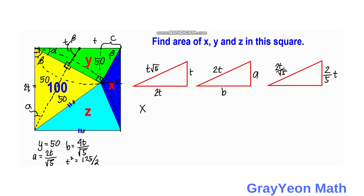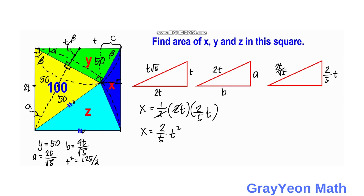For the area of X, since it is a triangle, the area equals one half times the base times the height. The base is the side of the square, which is 2t, and the height is c, which is 2t/5. Simplifying: X equals one half times 2t times 2t/5, which equals 2t²/5. Substituting t² = 125/2, we get X = (2/5) × (125/2) = 125/5 = 25 square units.